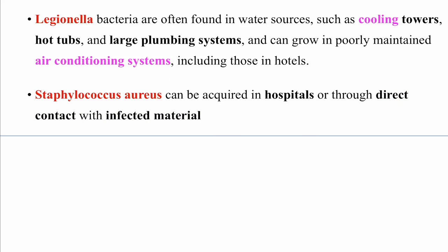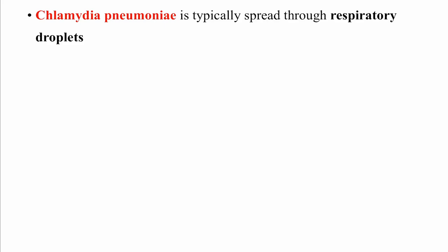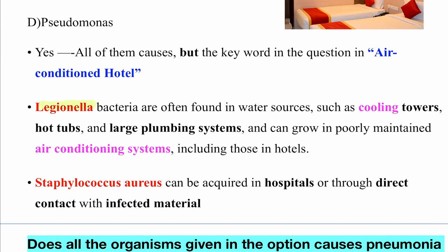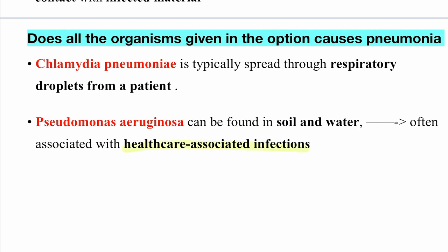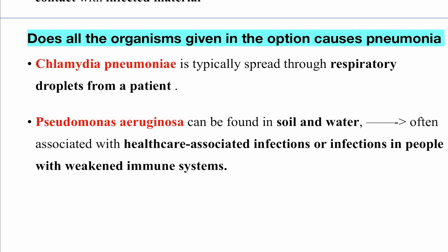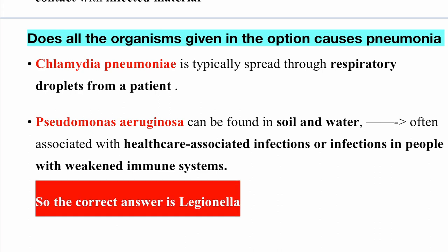Staphylococcus aureus is acquired from hospitals through direct contact with infected material — not from a watery environment. Chlamydia spreads through respiratory droplets directly from patients. Importantly, you cannot get Legionella directly from a patient — you must be exposed to the contaminated environment. Pseudomonas aeruginosa is associated with healthcare infections or weakened immune systems. All other options spread person-to-person; Legionella does not. So the correct answer is Legionella.